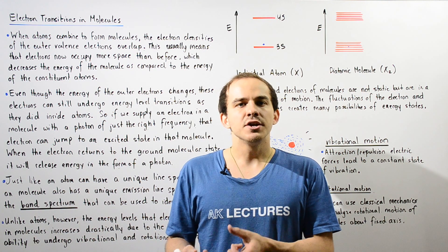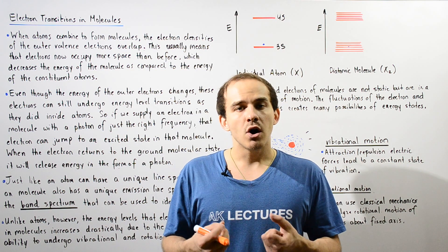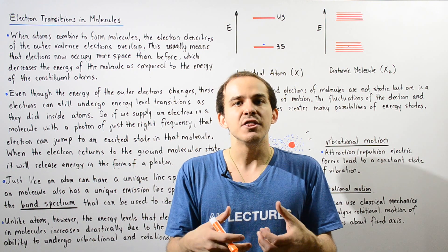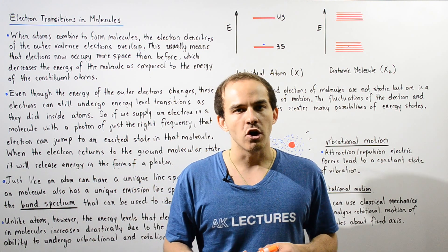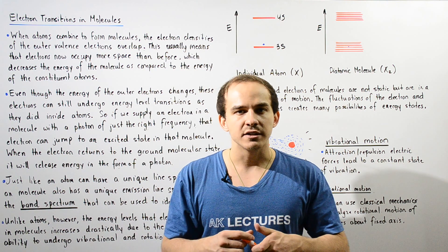Well, basically, the electron probability densities of the outermost valence electrons of those atoms combine or overlap, and that's how a bond is formed.